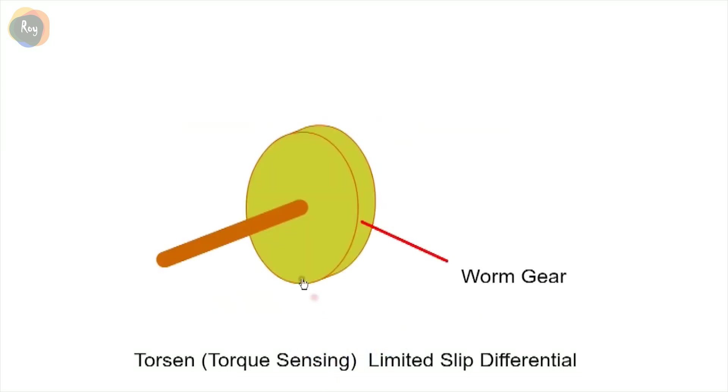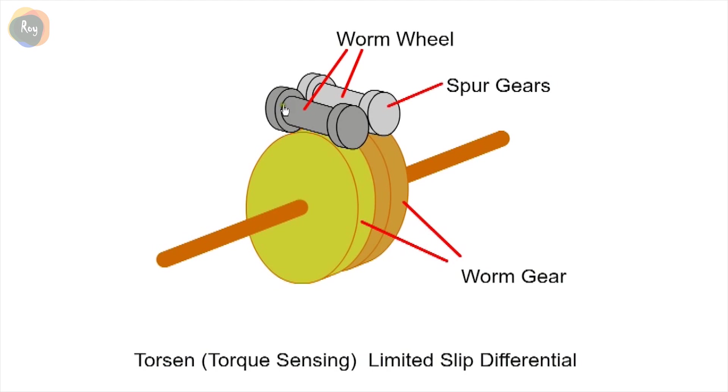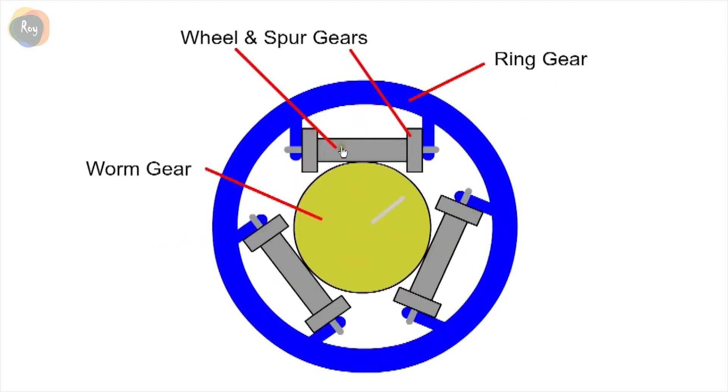The Torsen consists of a worm gear attached to the half shaft. This gear is meshed with a worm wheel that has spur gears at the ends. Here we show one set of worm wheels, but in practice there are a total of three.